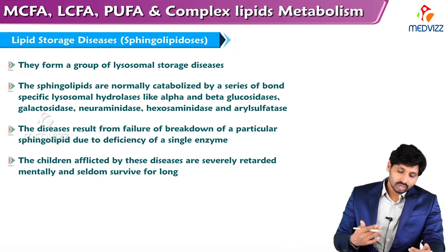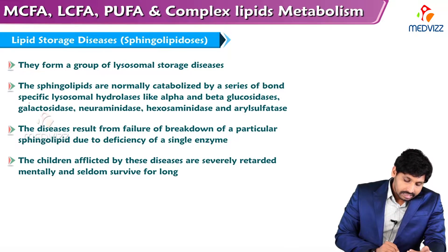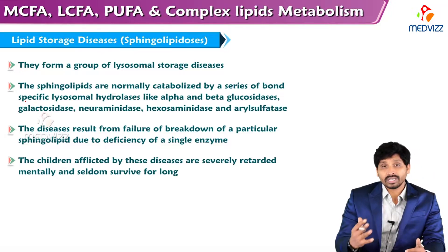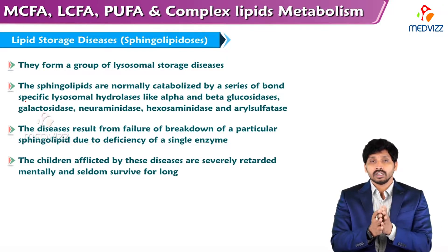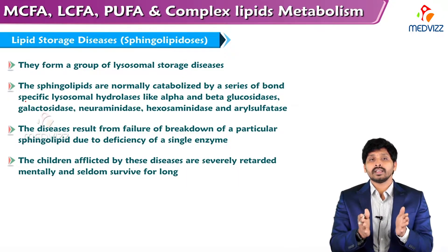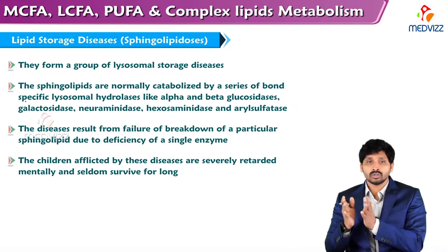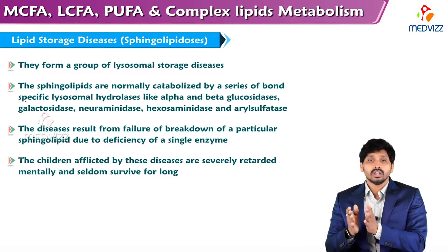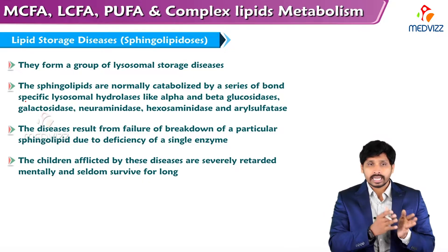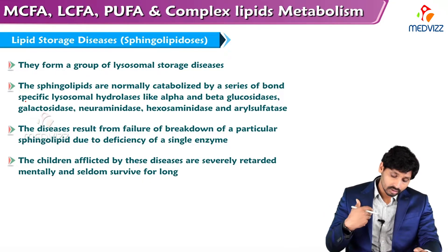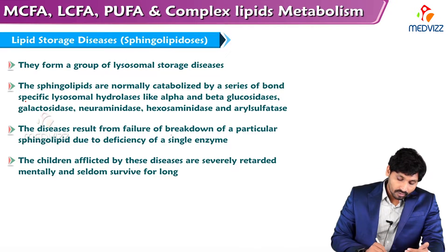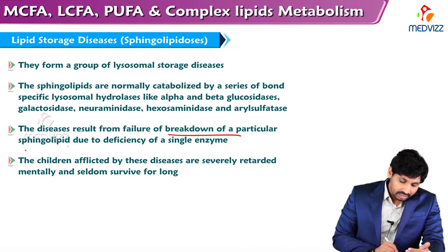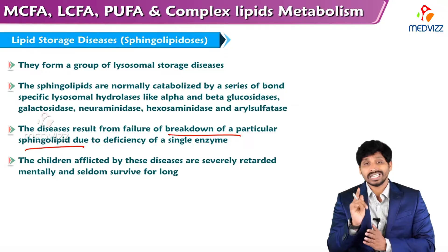The sphingolipids are normally catabolized by a series of bond-specific lysosomal hydrolases. The degradation of these complex lipids, specially sphingolipids, is carried out by lysosomal enzymes like alpha and beta glucosidases, galactosidases, neuraminidases, hexosaminidases, and aryl sulfatases.